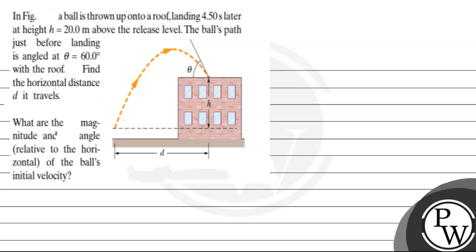Hello, let's read this question. In the figure, a ball is thrown up onto a rope, landing 4.5 seconds later at height h equals 20 meters above the release level. The ball's path just before landing is angled at theta equals 60 degrees with the rope. Find the horizontal distance d it travels, and the magnitude and angle relative to the horizontal direction of the ball's initial velocity.